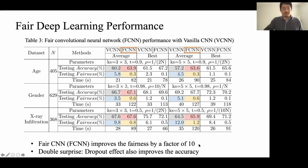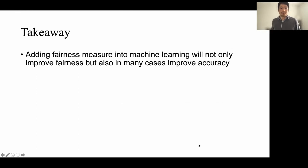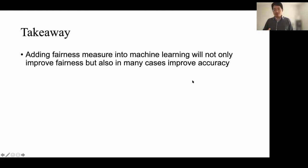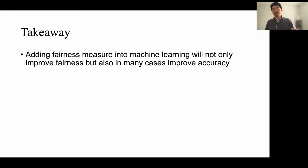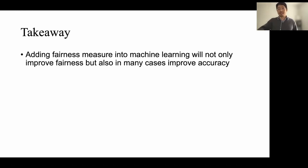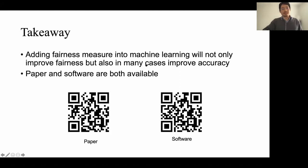To conclude: in this talk we discussed fair machine learning. What we propose is that adding a fairness measure to machine learning models can not only improve fairness, but in many cases also improve accuracy, because we select the most important data points. Those selected data points are not only fair but also more accurate. Both the software and the paper are available online. Thank you very much for your attention.